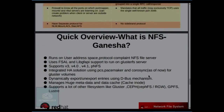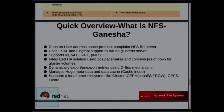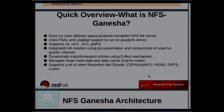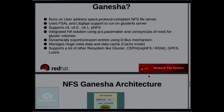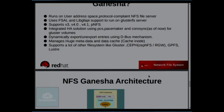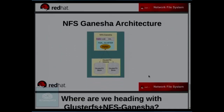NFS Ganesha is a user-space, RFC-protocol-compliant NFS server supporting NFS V3, V4.0, and pNFS. It uses the libgfapi and NFS FSAL support to run the GlusterFS backend. It has integrated HA with PCS and Pacemaker currently, but going forward we will be moving towards CTDB with NFS Ganesha. It has a dbus mechanism for exporting volumes — if one node goes down, other nodes are notified and enter a grace period. It supports multiple file systems including GlusterFS, CIFS, GPFS, and Lustre.